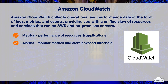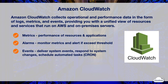CloudWatch Alarms is also commonly used with EC2 Auto Scaling to perform scaling actions. CloudWatch Events delivers system events of AWS resources and takes actions on state changes. For instance, you can configure CloudWatch Events to respond to state changes of EC2 instances and send a notification when an instance is terminated. You can also use CloudWatch Events to schedule automated cron tasks, such as scheduling automated snapshots for EBS volumes.